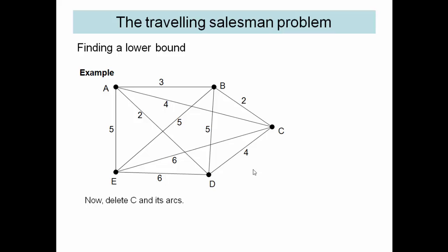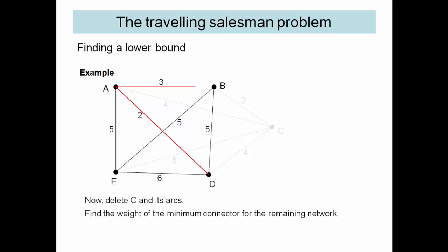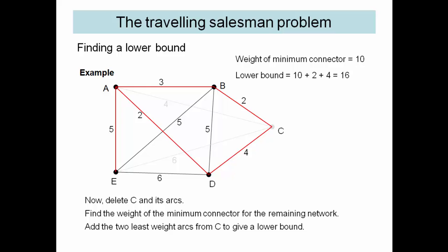So now we delete C and all the arcs there and see what happens. Minimum connector of just 10. But this time the two smallest are slightly bigger, so again we come in at 16.